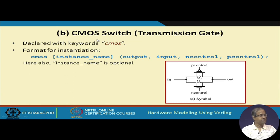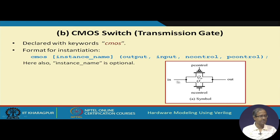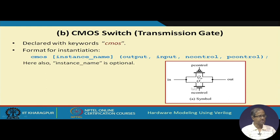CMOS stands for Complementary MOS. In a CMOS switch, an NMOS switch and a PMOS switch are connected in parallel with two control signals — N control and P control. When instantiated: output, input, N control, P control. Normally N control and P control are complements; applying 1 and 0 respectively makes it conducting, 0 and 1 makes it off. A CMOS switch is better than a single transistor switch because it avoids the voltage degradation that occurs with a single N-type or P-type pass transistor.